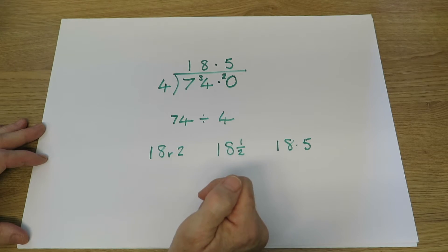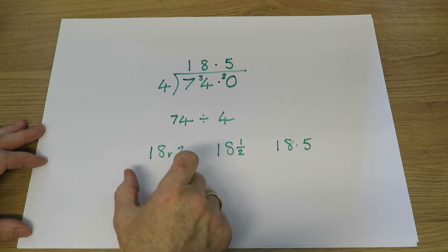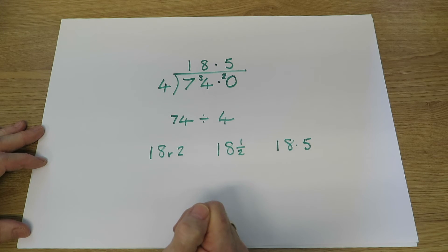Or if we're talking about 74 kilometres and dividing that by four, then the answer could be 18.5 kilometres. All three answers to the same mathematical question.